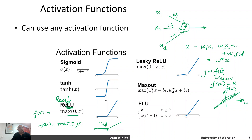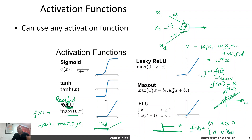Similarly, you can have a step activation, in which if the net input to the neuron is below zero it does not fire, but if it is positive it generates an output of +1. The equation for that is: f(u) = 1 if u ≥ 0, and 0 otherwise.